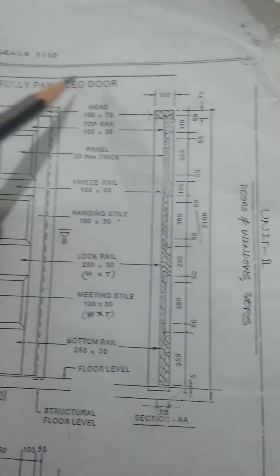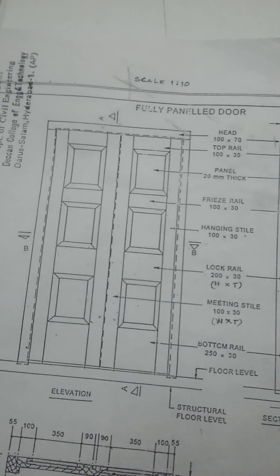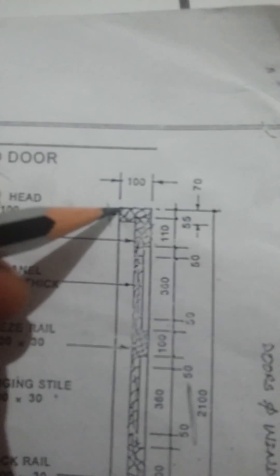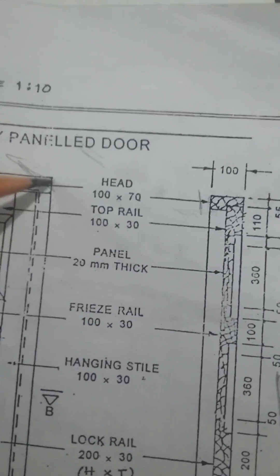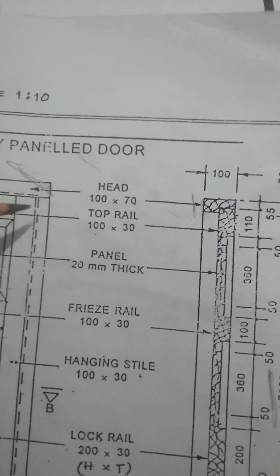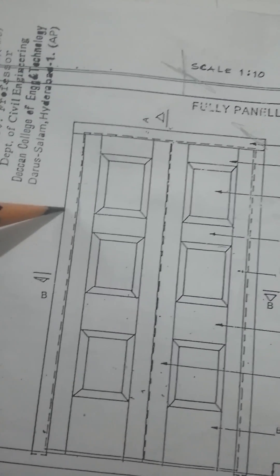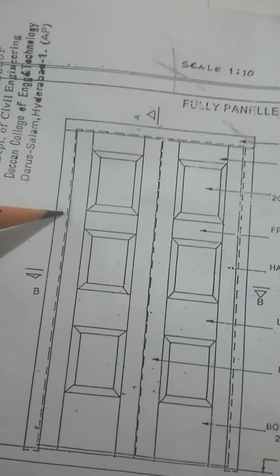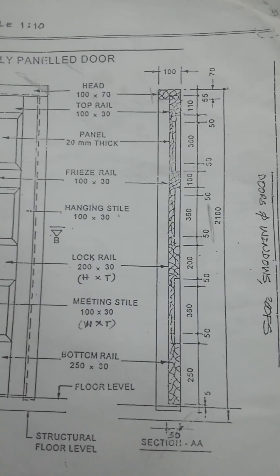First you have to draw the length and breadth — 20 or 21 centimeters and 12 centimeters. Then take the distance of 55, draw the boundaries. From here to here is 55. You need to draw all sections using these measurements.